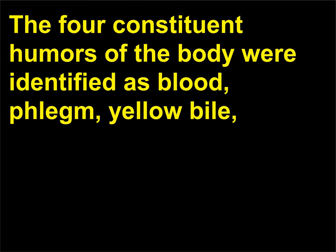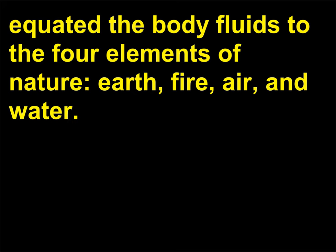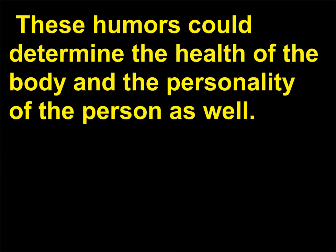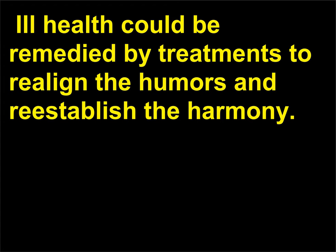The four constituent humors of the body were identified as blood, phlegm, yellow bile, and black bile, originating in the heart, brain, liver, and spleen, respectively. Empedocles of Agrigentum (504–433 BCE) probably originated the theory in which he equated the body fluids to the four elements of nature: earth, fire, air, and water. These humors could determine the health of the body and the personality of the person as well. To be in good health, the humors should be in harmony within the body. Ill health could be remedied by treatments to realign the humors and re-establish the harmony.